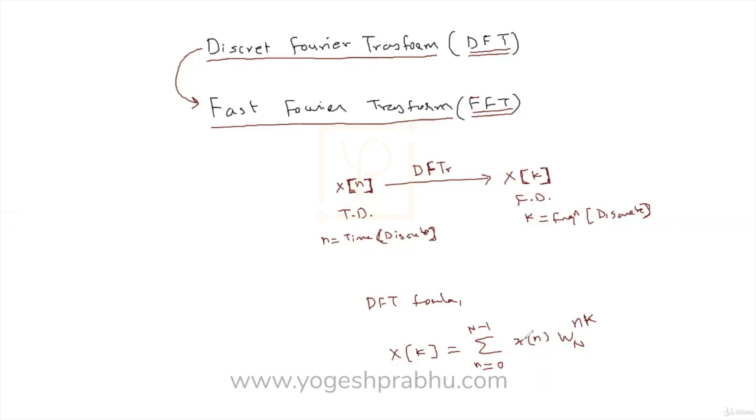Now basically what we do is we take this X of N time domain signal and we apply this sum and can you see a factor over here, which is W N raise to NK? Now this is something very important. We will be talking about this in detail eventually later on. But then this is called as the twiddle factor.